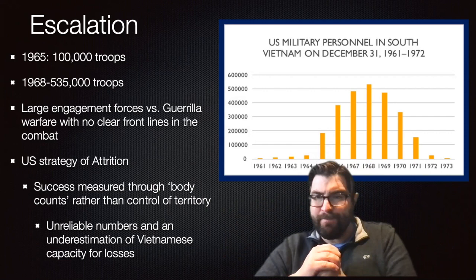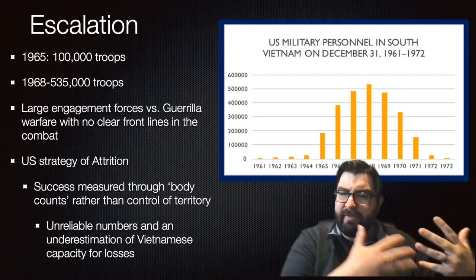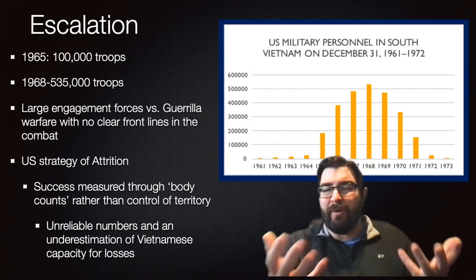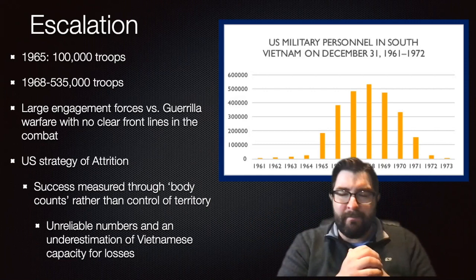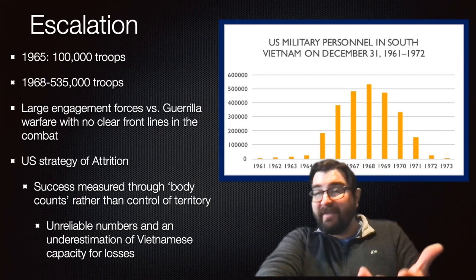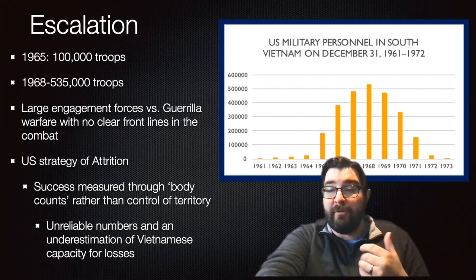The United States was fighting what we call a war of attrition in South Vietnam, measuring the success of the war through body counts rather than control of actual territory. But this body count strategy was quite unreliable. As one American veteran said, if it was dead and Vietnamese, it was Viet Cong, and the number got counted. The communists were suffering tremendous losses, but the United States underestimated the willingness of the North Vietnamese and communists to absorb those losses.